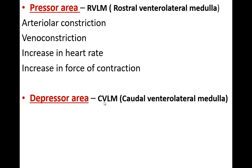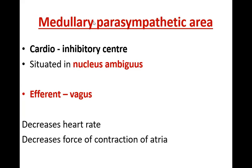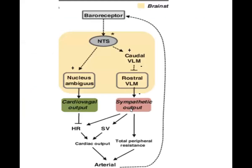Whenever the depressor area CVLM is stimulated, it inhibits the RVLM, resulting in arteriolar dilation, decrease in heart rate, and decrease in force of contraction. Apart from these two areas, there is one more area called the medullary parasympathetic area, also called the cardio-inhibitory area, present in the nucleus ambiguus. The efferent is the vagus, which is inhibitory to the heart and causes vasodilation because it is a parasympathetic nerve using acetylcholine as neurotransmitter. It decreases heart rate, decreases force of contraction, and also causes vasodilation.